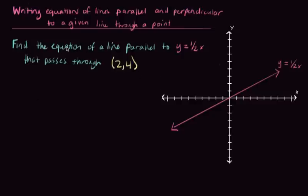It says find the equation of a line parallel to y equals 1 half x that passes through (2,4). So let's start by finding the point (2,4). That looks like it's right here. So there's the point (2,4).